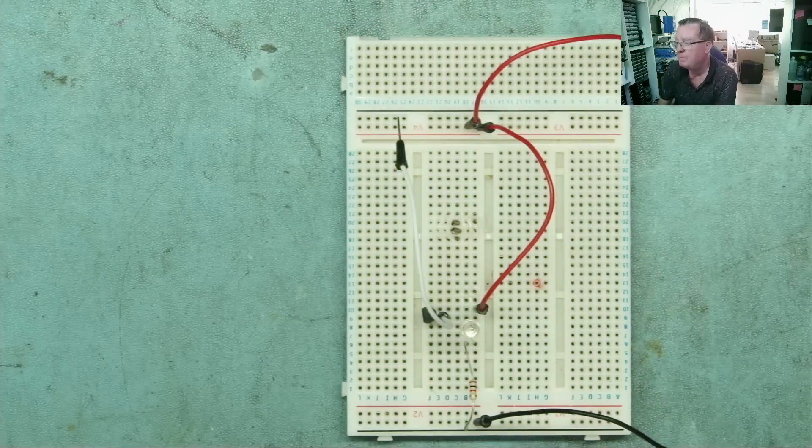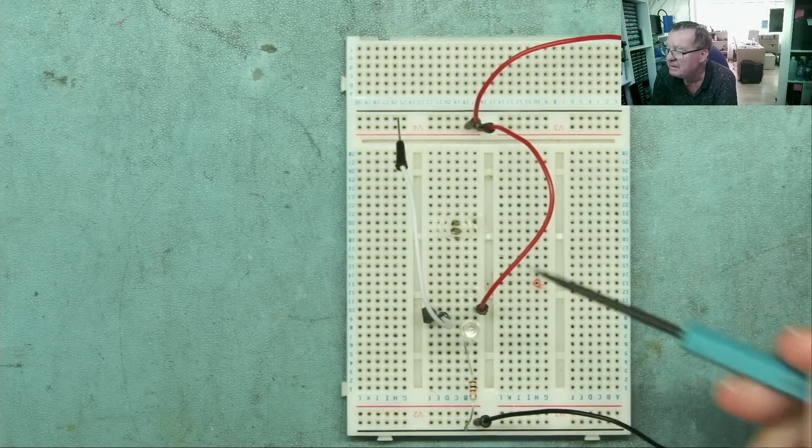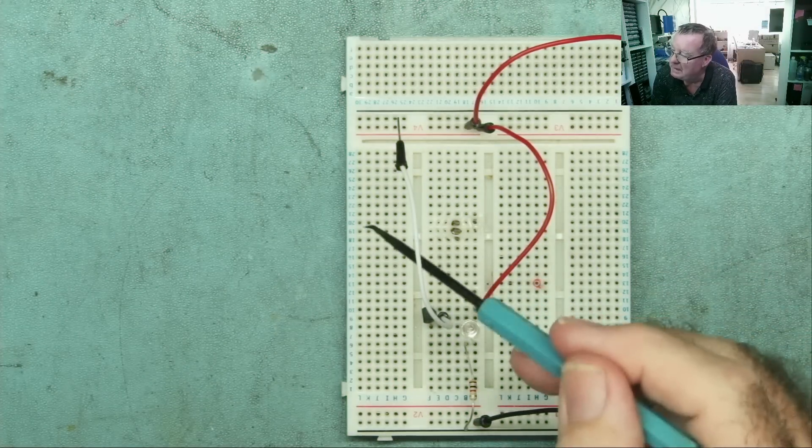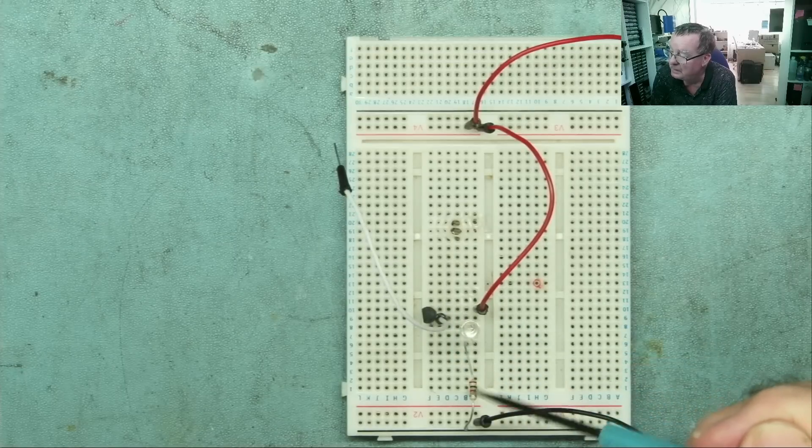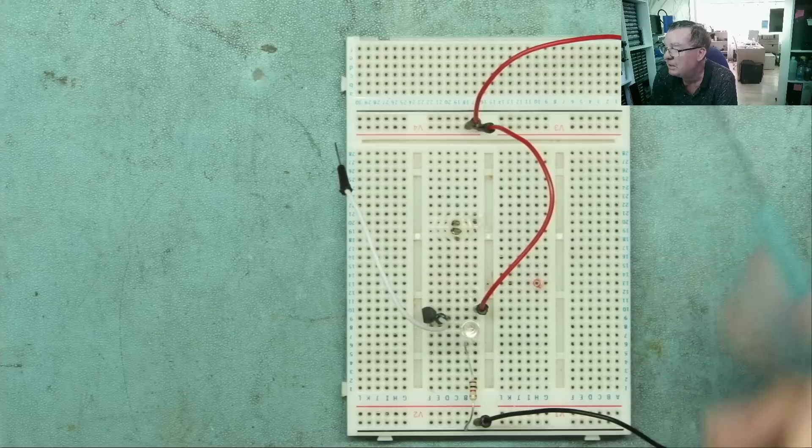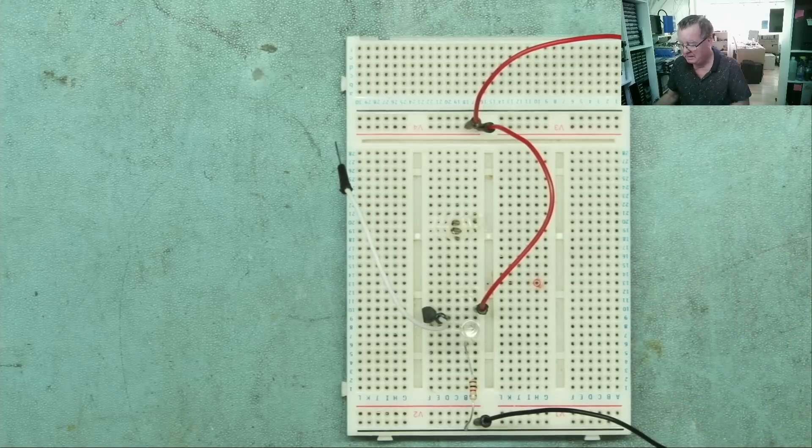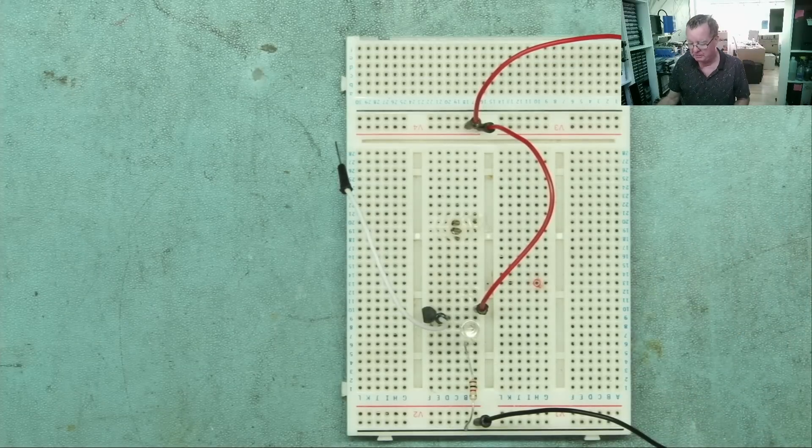Here on my breadboard, which has had a very hard life, as you can see, I've made a little circuit. So we have a JFET, we have an LED, we have a 1K resistor and a few wires. That's all we have. Let me draw this on a piece of paper so you know what we actually have.